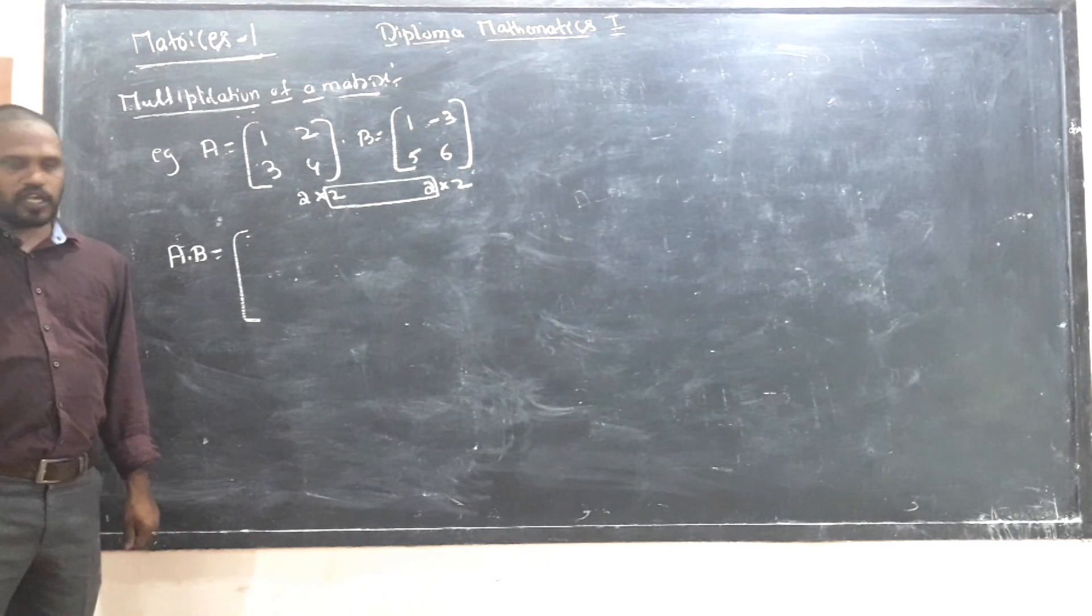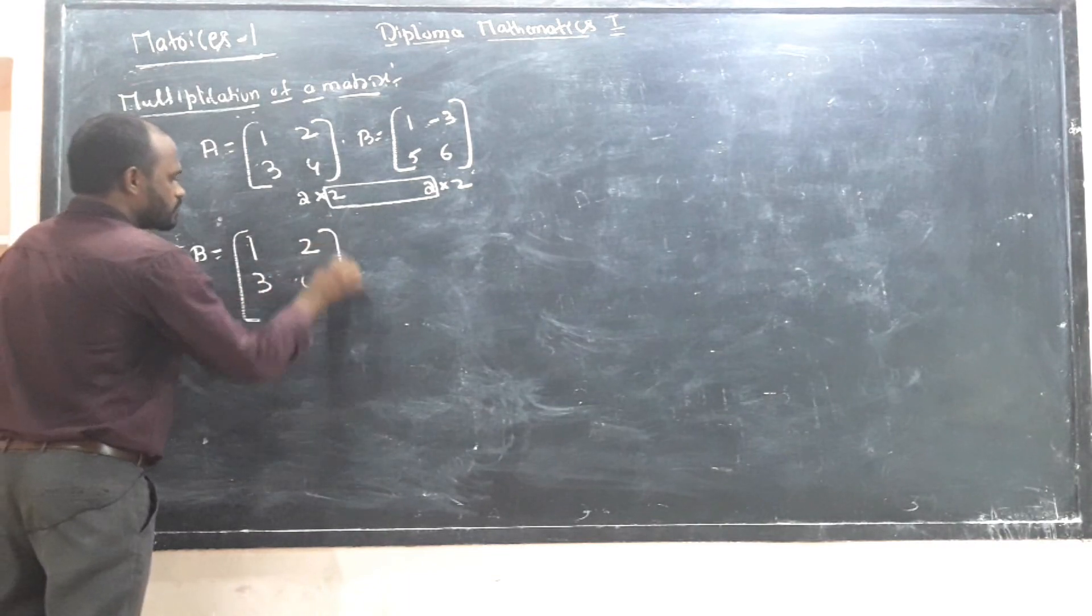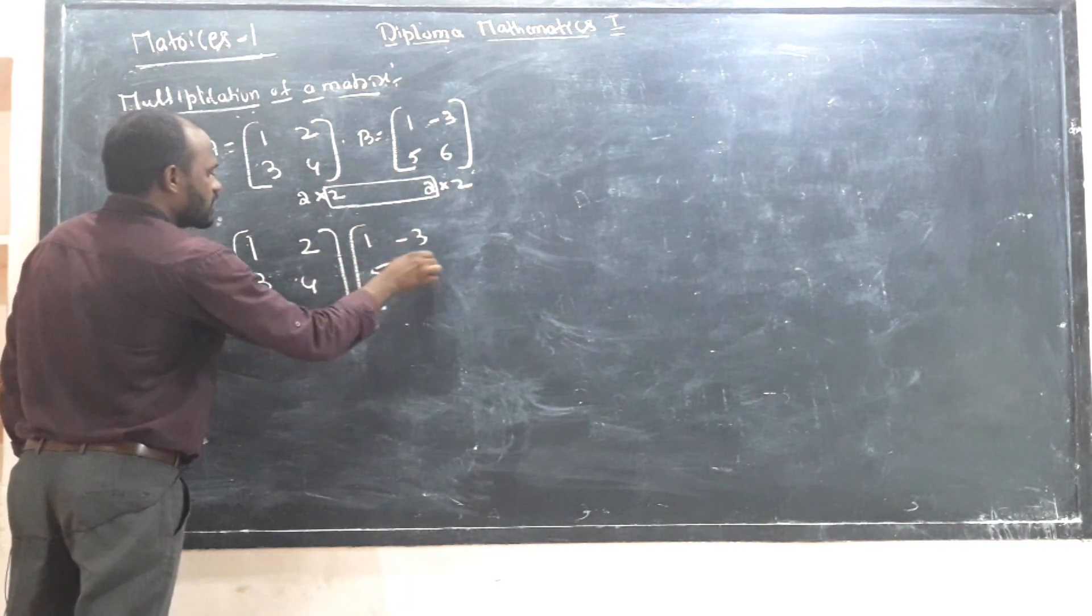Now, A value is 1, 2, 3, 4 and B value is 1, minus 3, 5, 6. A into B.